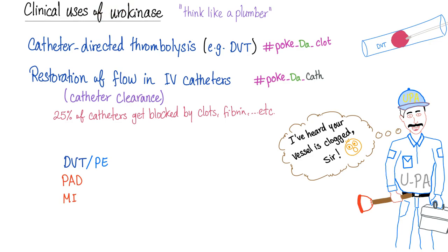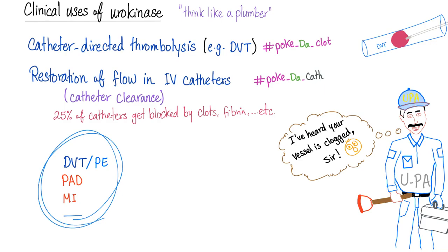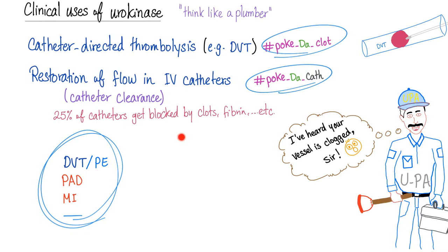We use urokinase for DVT-PE, peripheral arterial disease, and myocardial infarction — in other words, to poke the clot and clear the patient, or to clear the catheter. Basically, urokinase is just like the drain cleaner you pour down a kitchen sink to unclog it.